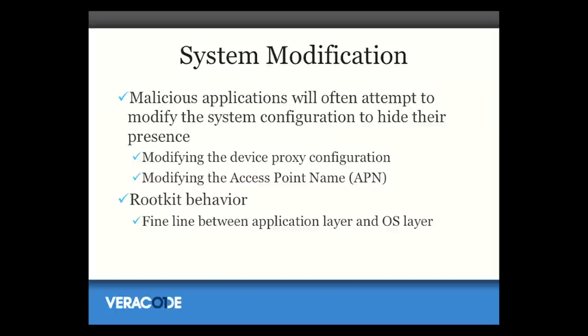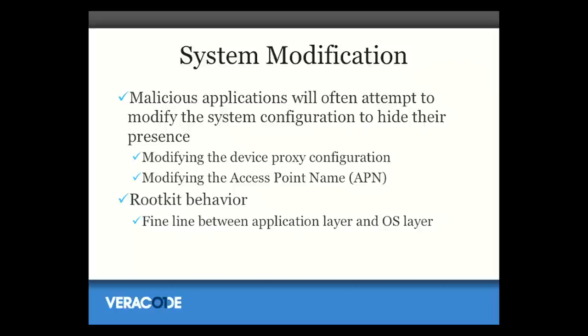The other thing we look for in malicious code is system modification. You can look for all the API calls that require root privilege to execute correctly. Changing the device's web proxy would be something an application shouldn't be able to do. But if the application has code to do that, it's probably a malicious application. What would happen is that app would have some way of escalating privilege — a privilege escalation exploit in the application — and once it escalated privileges, it would do these system modifications. You can find malware that has privilege escalation in it even without knowing how the privilege escalation exploit is going to happen.